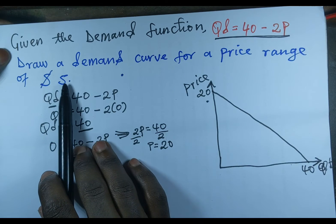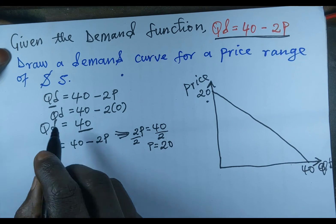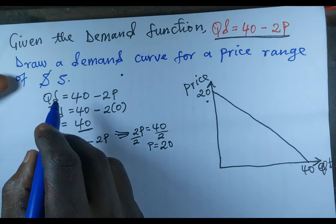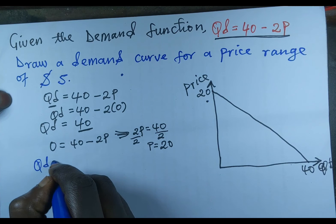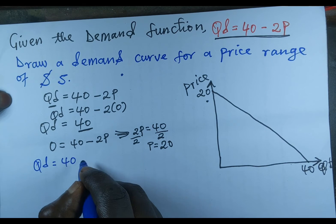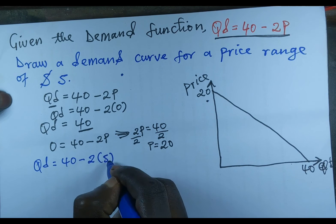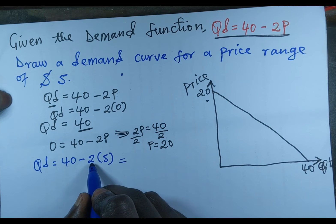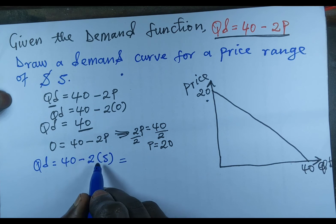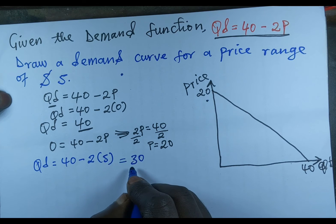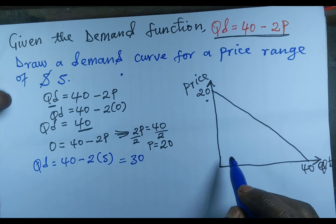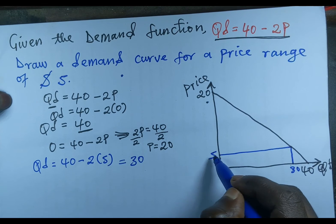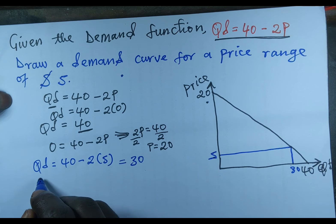Since the question says draw the demand curve for a price range of 5 US dollars, let's substitute price levels into the demand function. For P = 5: Qd = 40 minus 2 times 5 = 40 minus 10 = 30. So we plot the point where quantity is 30 and price is 5 on the graph.